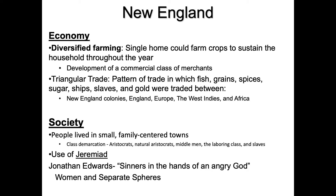When it comes to society in New England, it's very different from the Middle colonies and especially the Southern colonies. People lived in small, family-centered towns — small farms, a town center, everybody close together with a lot of social pressure. There is a distinct class structure: aristocrats at the top, then natural aristocrats, middlemen, the laboring class, and slaves.